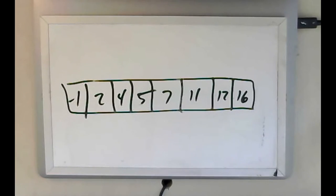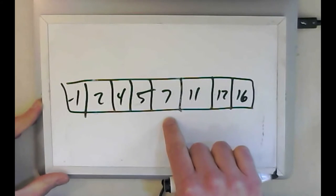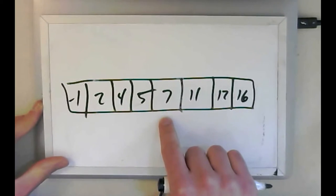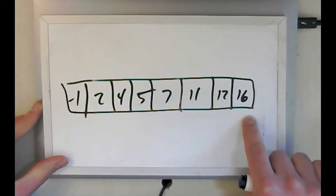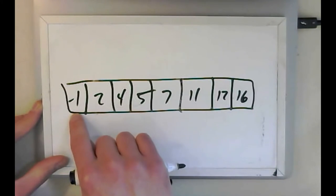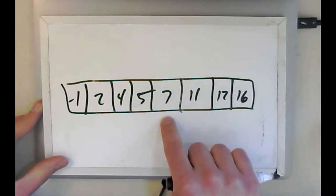So let me take a value that's right in the middle of the array. Now this array has eight values, and so I could choose five or I could choose seven. Let's just choose seven. Now I know because the array is sorted that all the values to the right of seven are bigger than or equal to seven, and all the values that are left of seven are smaller than seven.